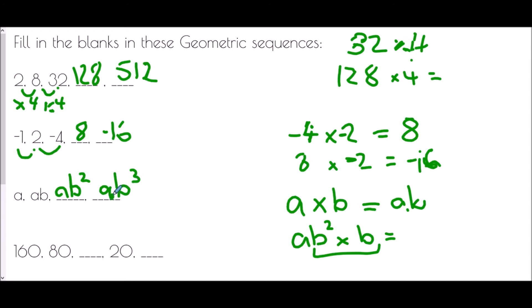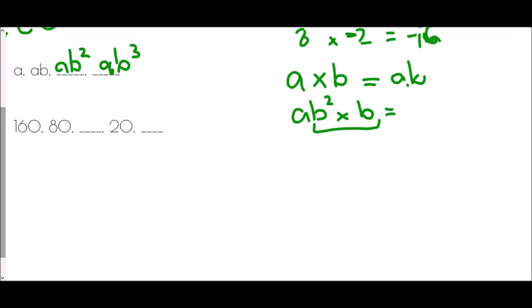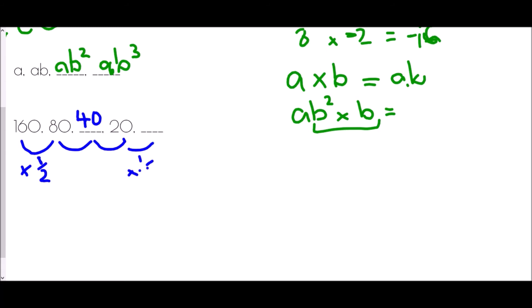Finally, we're trying to find the gaps in the sequence 160, 80, something, 20, something. The values are getting smaller, but multiplying does not necessarily mean getting bigger. To turn 160 into 80 is halving, so we've multiplied by a half. 80 times a half is 40; 40 times a half is 20; 20 times a half is 10.